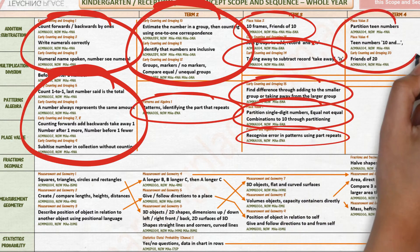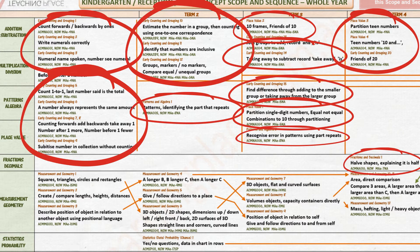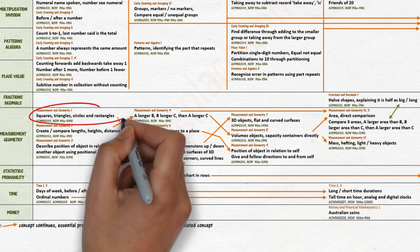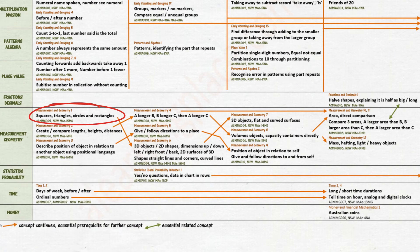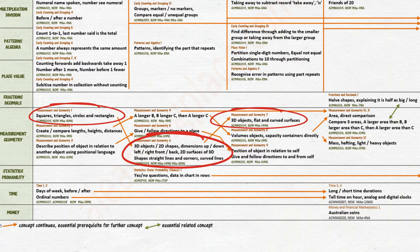In Term 4, they extend their understanding of teen numbers, explaining teen numbers as 10 and partitioning teen numbers, and investigating friends of 20. Children investigate the fraction a half, explaining it is half as big. They investigate and name shapes and objects, and investigate lines on two-dimensional shapes and three-dimensional objects.